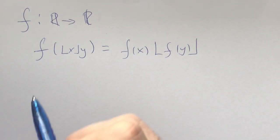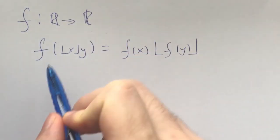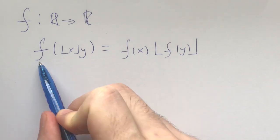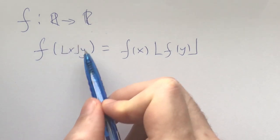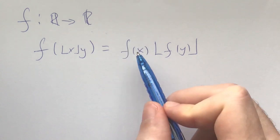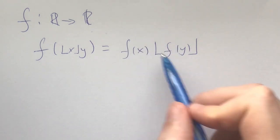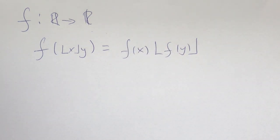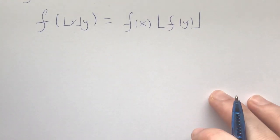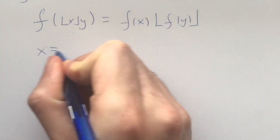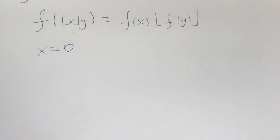We have a functional equation from the reals to the reals which satisfies this relationship: f of the floor of x times y is equal to f of x times the floor of f of y. With functional equations, it's a matter of plugging in specific values to narrow down what the functional equation can be. The first thing that comes to mind is plugging in x equals zero and y equals zero separately.